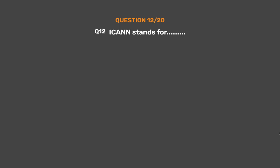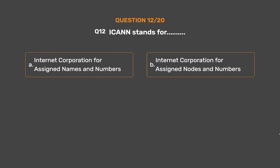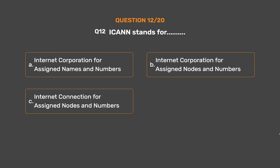Question number 12. ICANN stands for. Option A: Internet Corporation for Assigned Names and Numbers. Option B: Internet Corporation for Assigned Nodes and Numbers. Option C: Internet Connection for Assigned Nodes and Numbers. Option D: All of the above.